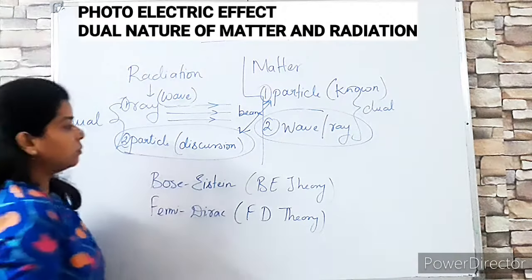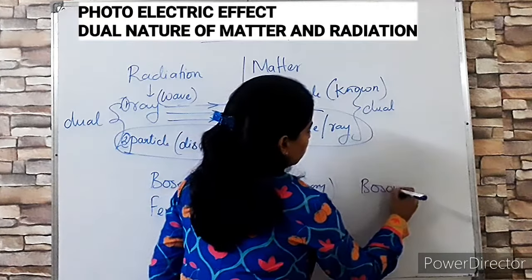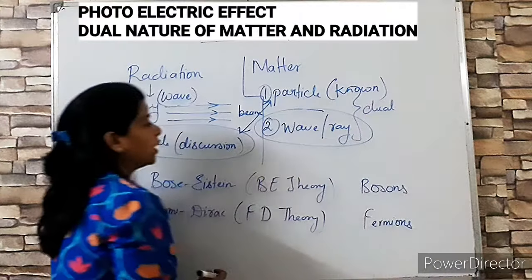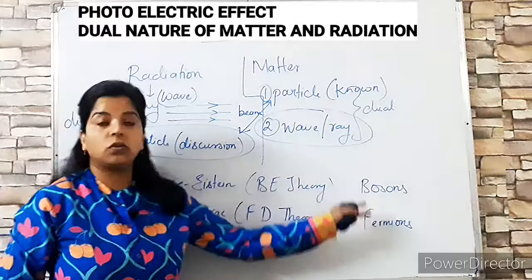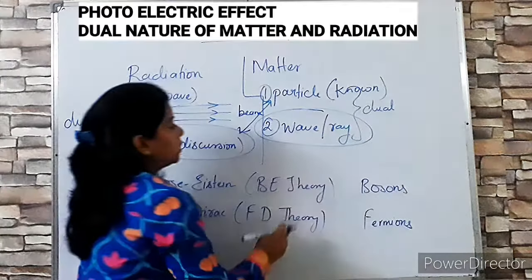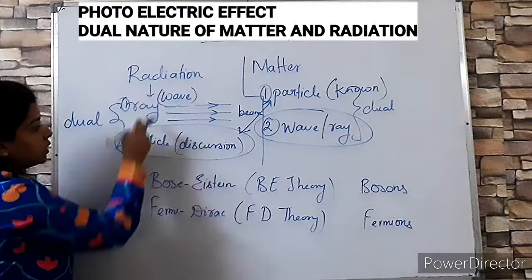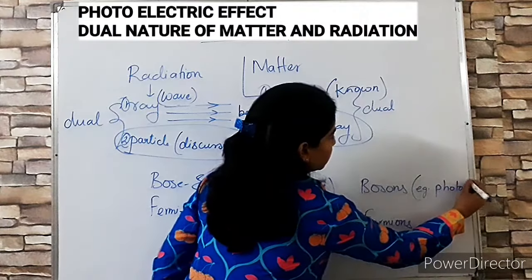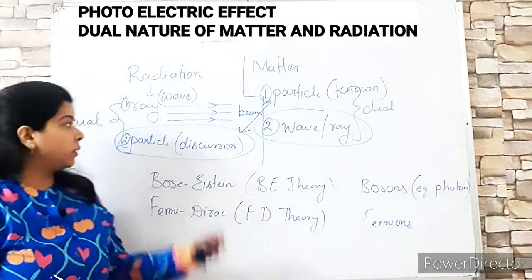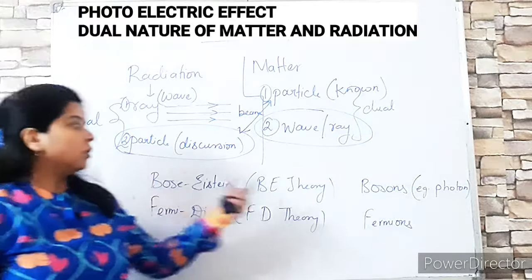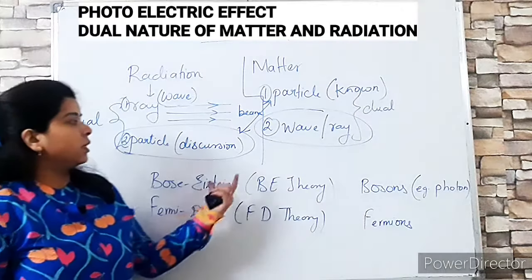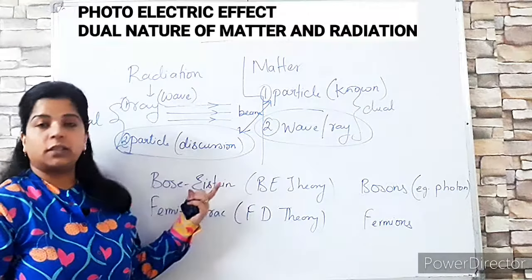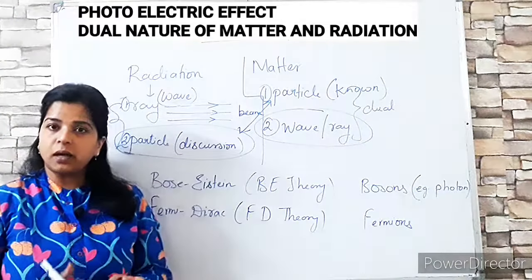The particles described by Bose-Einstein theory are called bosons. One example of a boson is the photon — the particle of light. Bosons are the elementary particles of radiation. The particles described by Fermi-Dirac theory are called fermions. Examples of fermions are electrons, protons, and neutrons — these are the elementary particles of matter. So bosons are radiation particles and fermions are matter particles.